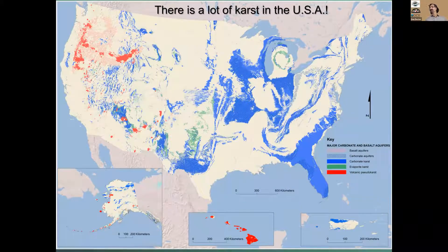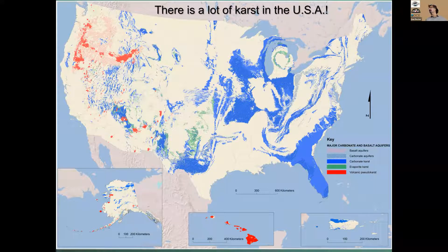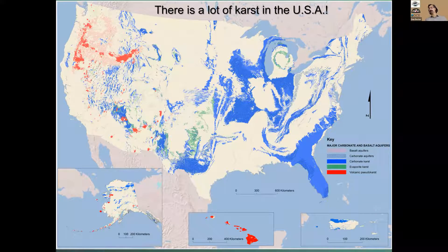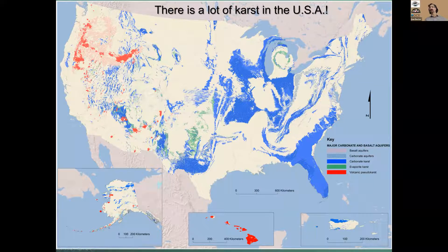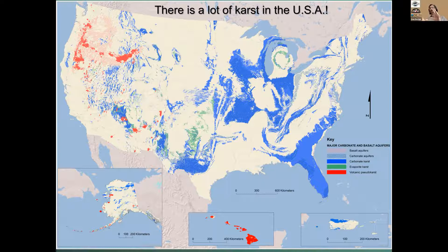There's actually a lot of karst in the United States. Here's a map of areas that contain carbonate rocks, shown in blue. The evaporite rocks — salt and gypsum — are shown in greenish colors near the surface. The reds show pseudo-karst: areas with caves in rocks that aren't prone to dissolving in water, but yield voids from other geologic processes — mostly basalt lava flows, where lava flowing underground in lava tubes leaves cave passages as it cools and hardens.